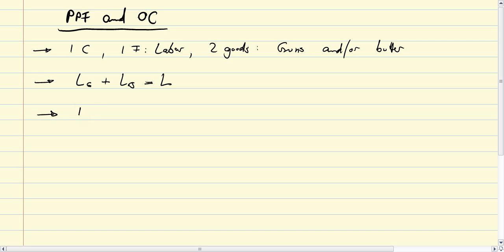Third, we can describe the technology available to that factor. The technology with which either guns or butter are produced is fully described by lowercase letter A as the labor input requirement, LIR.